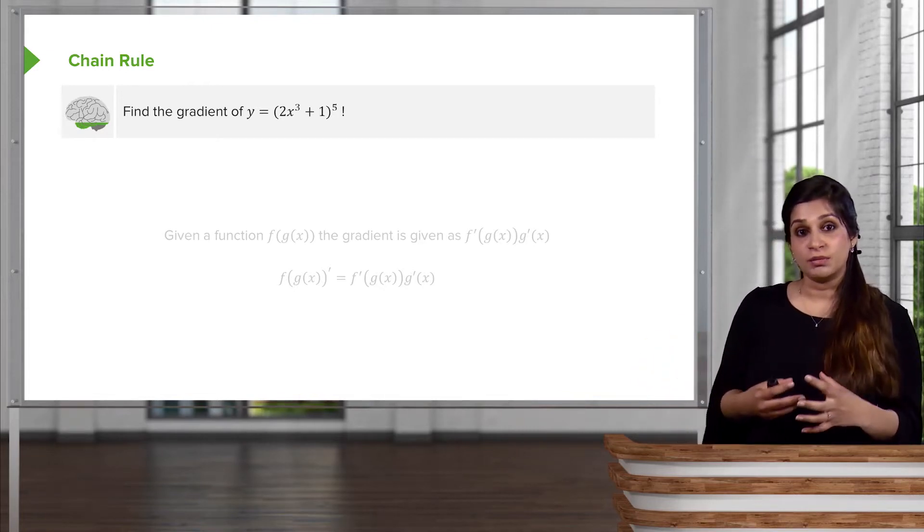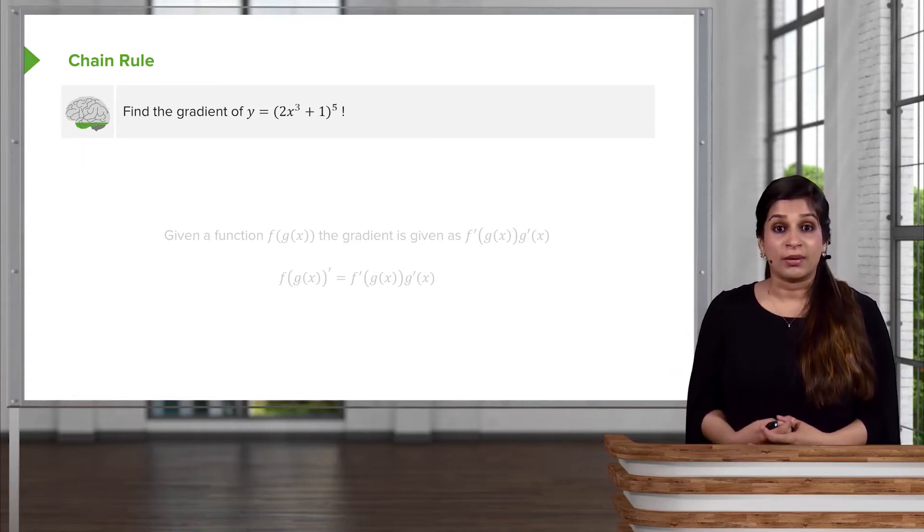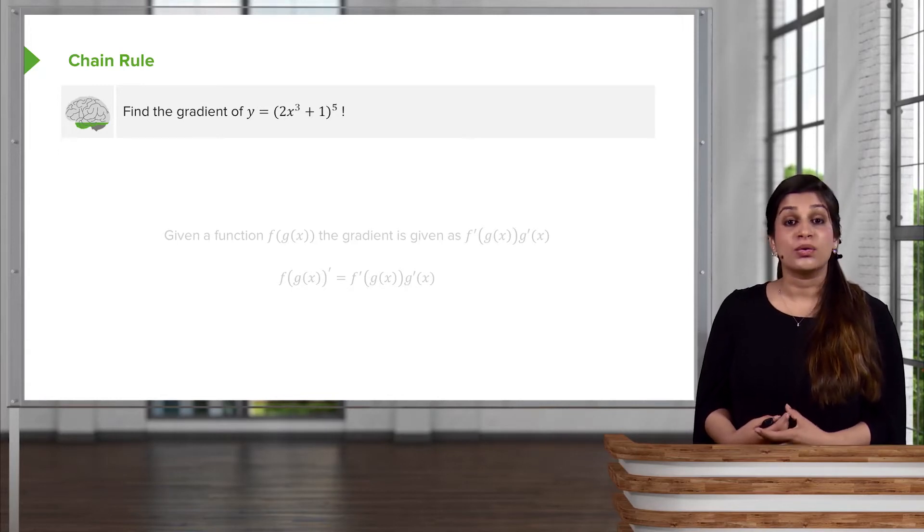Purely because it's a function inside of another function. We have 2x³ + 1, and it's inside another function which is to the power of 5. So you can see that this is a function of a function, and in order to do this we will have to use the chain rule.